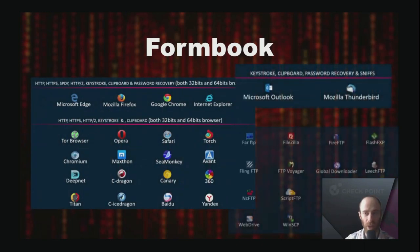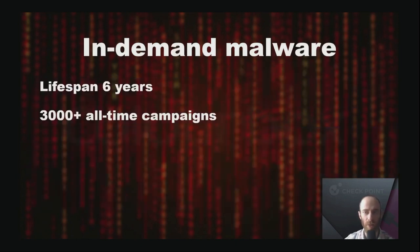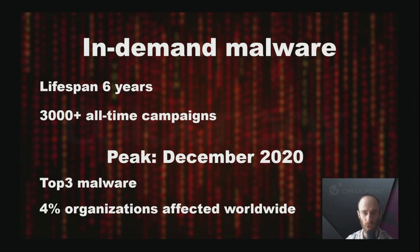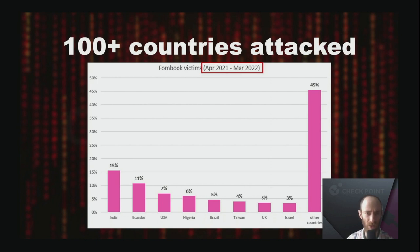Formbook can be described as a banker and a stealer targeting more than 100 different applications. Though simple in description, it is very sophisticated under the hood. Formbook is very high-demand malware with a lifespan of six years and more than 3,000 campaigns. It reached its peak in December 2020 when it was included in the top three malware prevalence list, targeting four percent of organizations worldwide. More than 100 countries were attacked, with India and Ecuador constituting one-fourth of all victims worldwide. The USA is in third place with seven percent of victims.